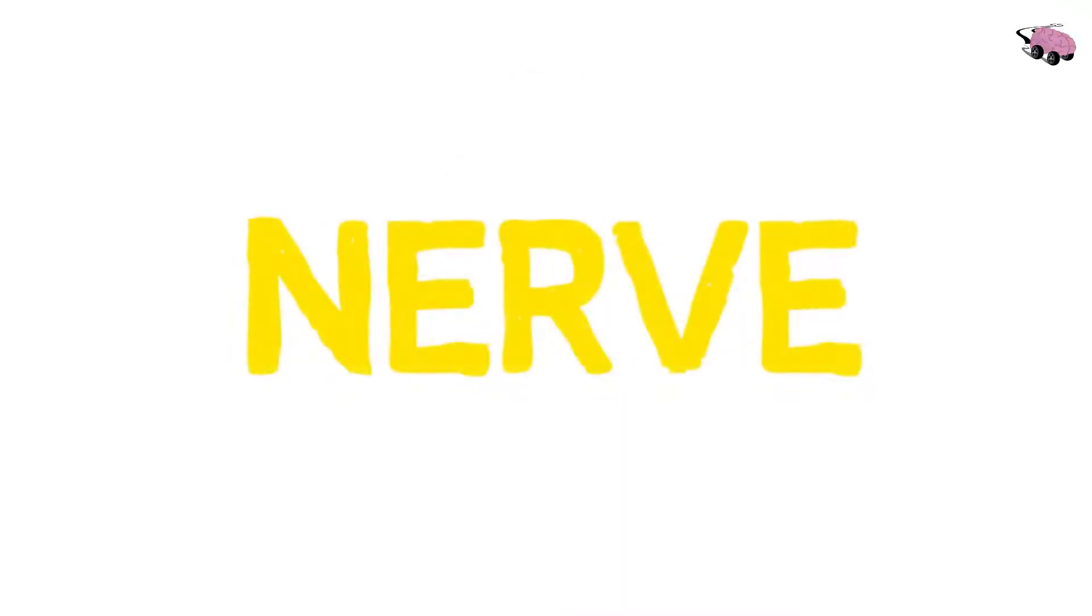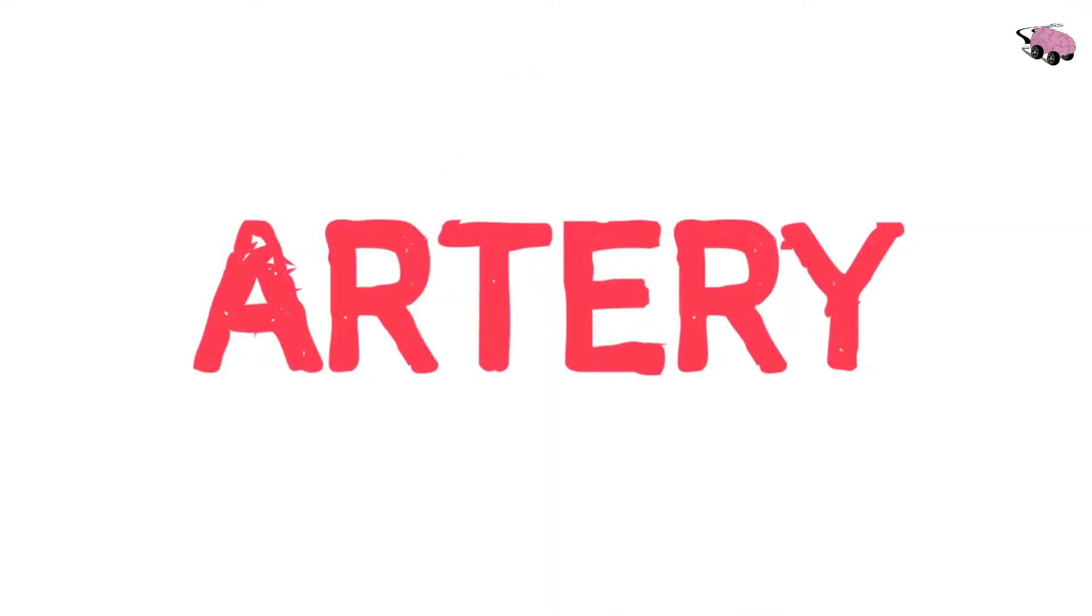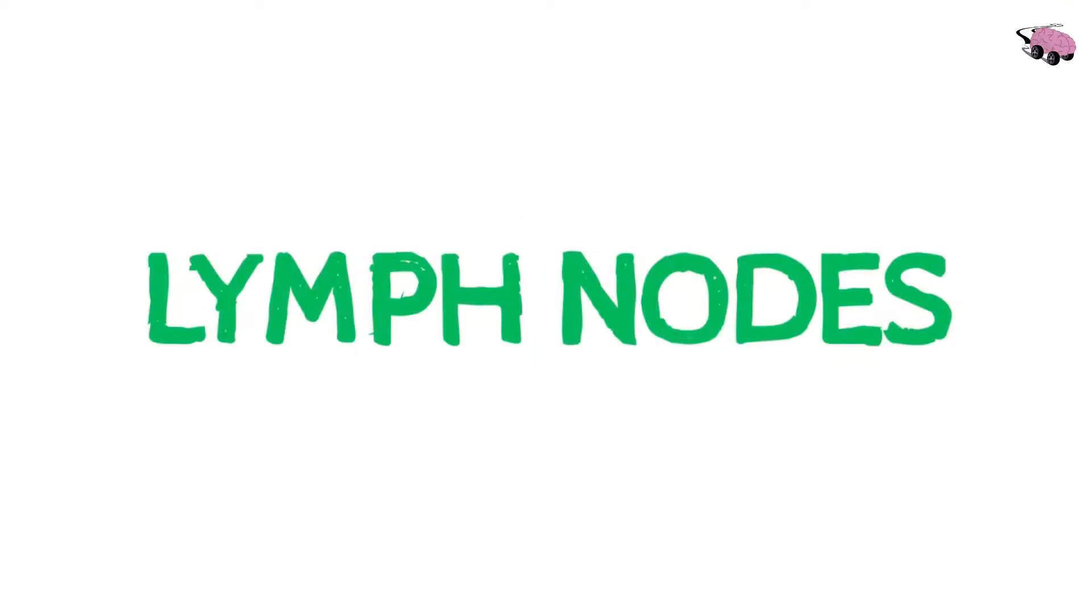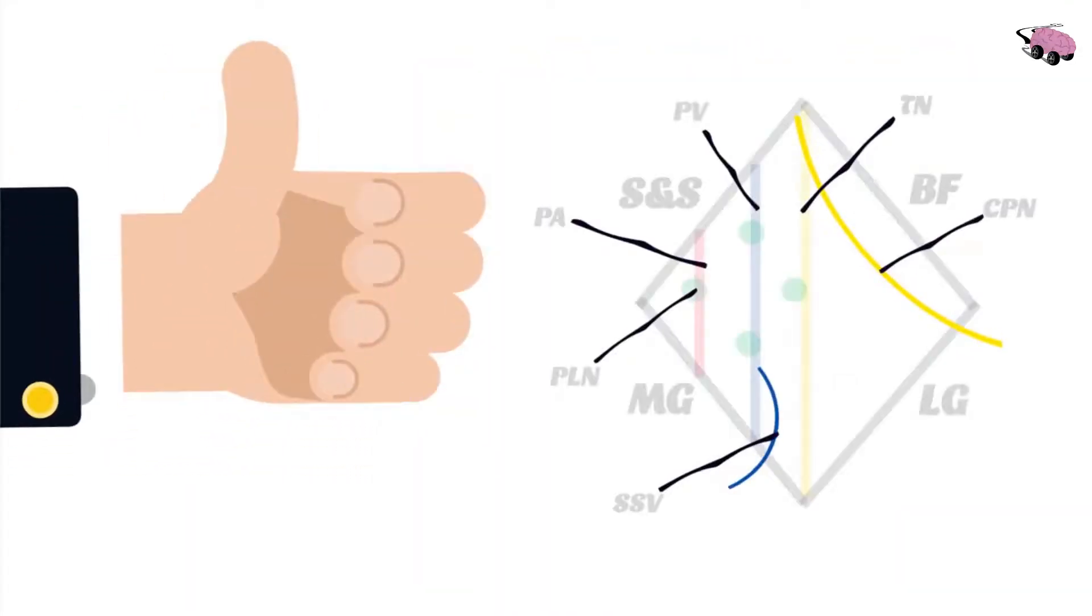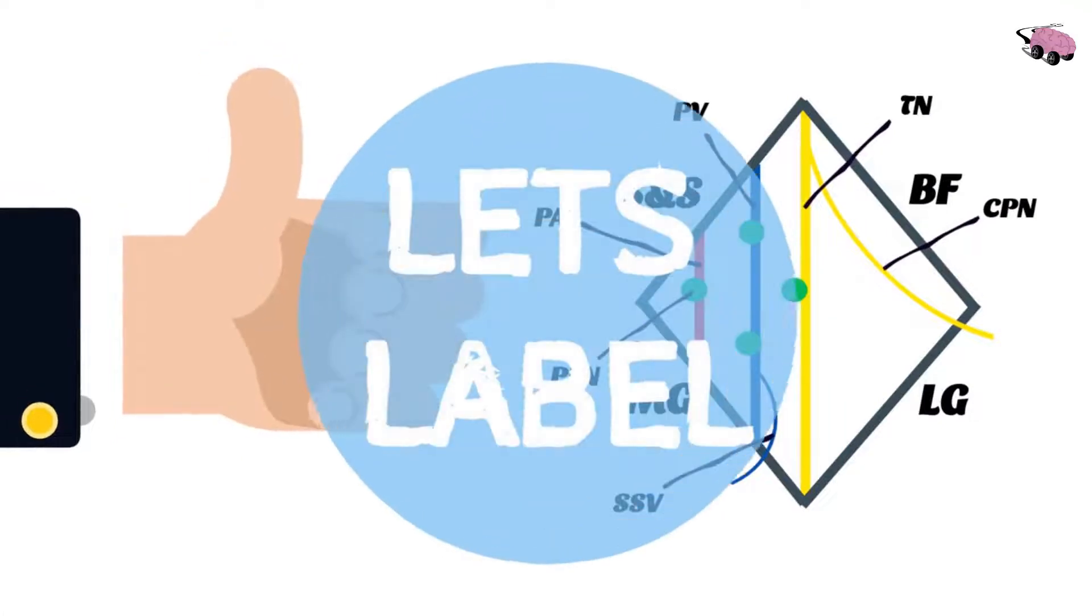By the way, yellow is nerve, blue is vein, red is artery, and green is lymph nodes. And if you don't know, now you know. Great job! It's pretty much complete now. Let's label.